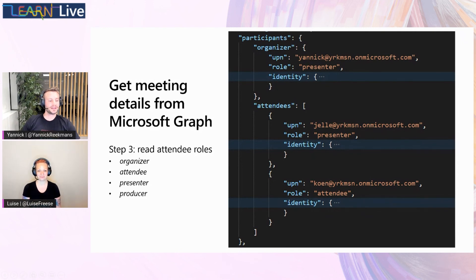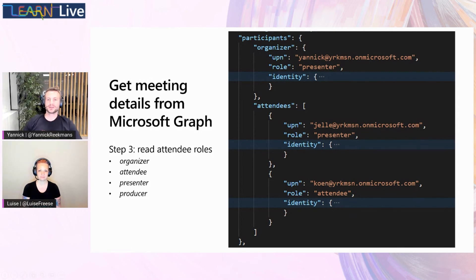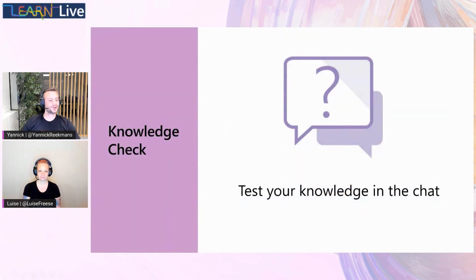Another interesting thing is you get all the attendees back from the online meeting — you can see all participants, that there can only be one organizer, and which role the organizer has. Then you have all the attendees and you can see which role each of them has. There's one presenter and one attendee, and they produce a role specifically for live events and webinars.